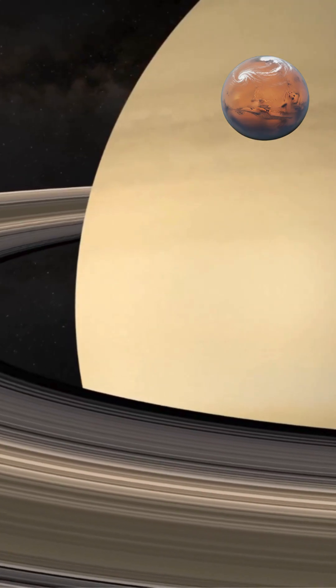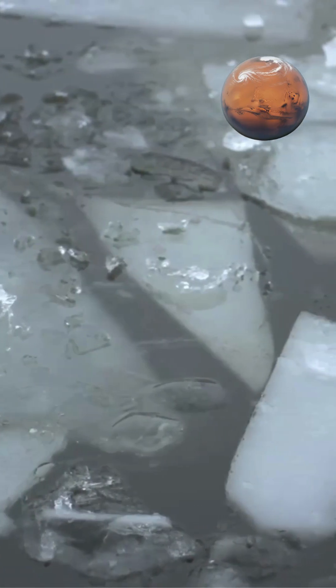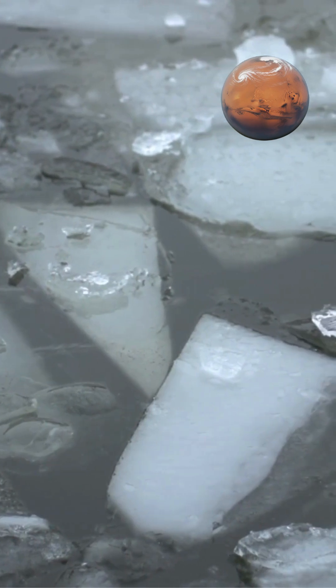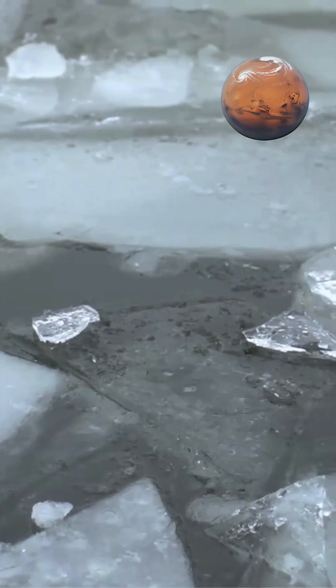The primary reason for the ring's flatness is orbital mechanics. Saturn's rings consist of billions of particles ranging from tiny dust grains to house-sized chunks of ice and rock, all orbiting the planet.